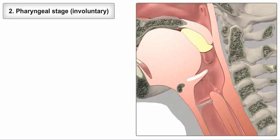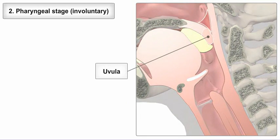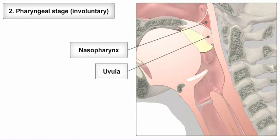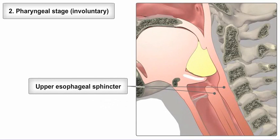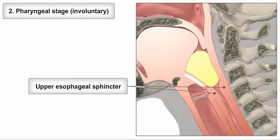The brain signals the soft palate and uvula to close off the nasopharynx and the epiglottis to seal off the larynx. This prevents the bolus from entering the respiratory tract. The upper esophageal sphincter relaxes to allow the bolus to move